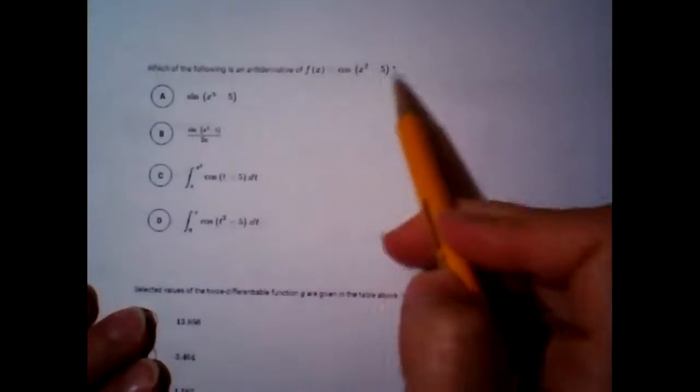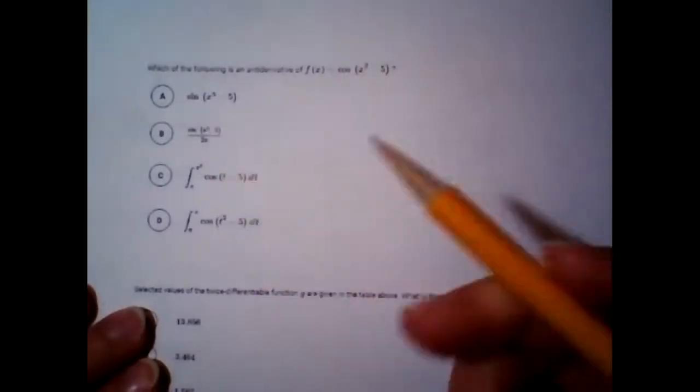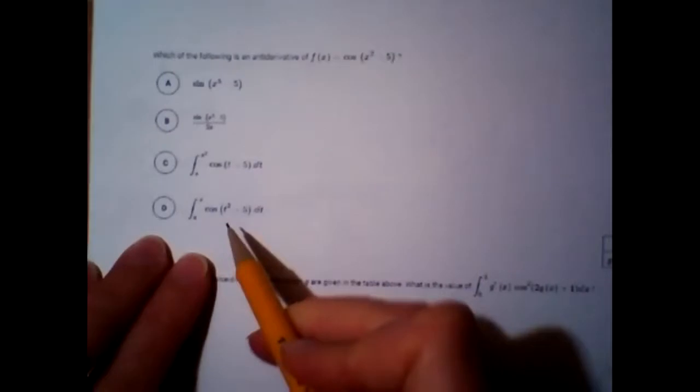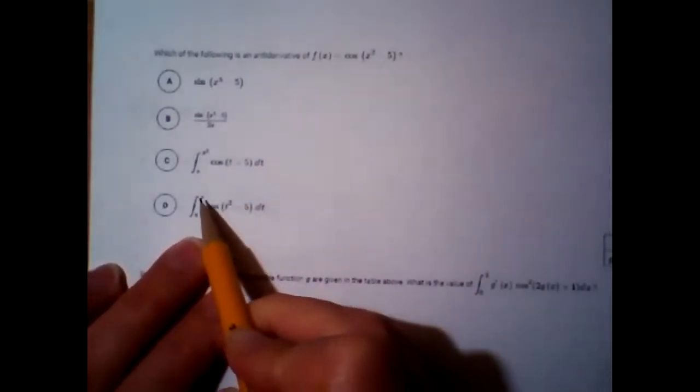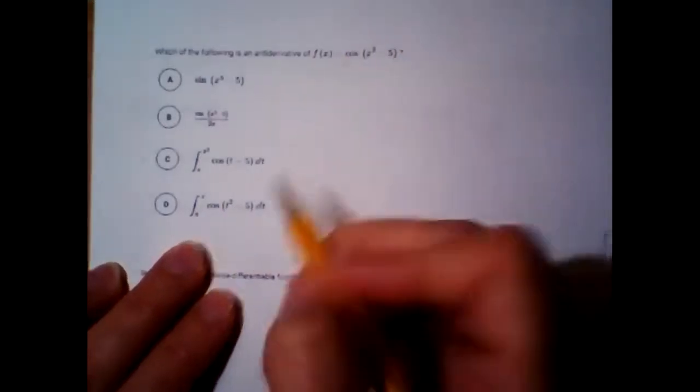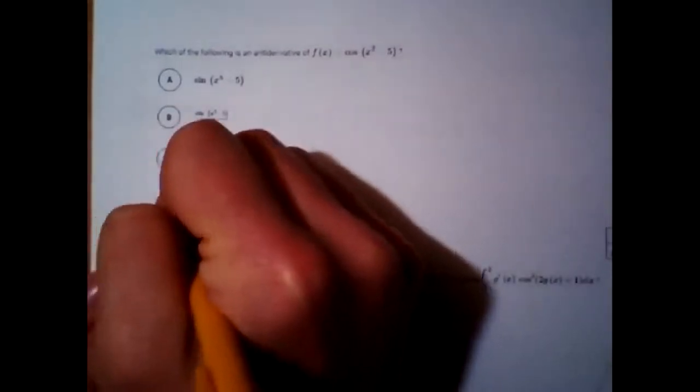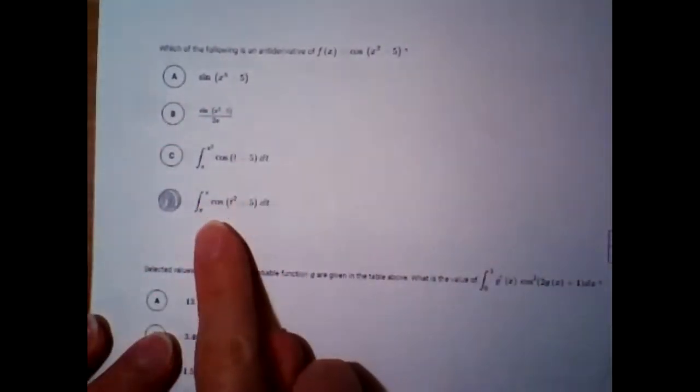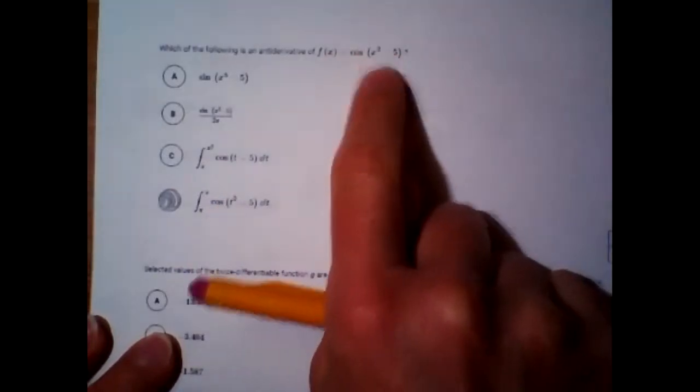Alright, so here, which of the following is an anti-derivative of this? That means which one of these, and I'll zoom way in here. If you did the derivative, you would get this as the answer. Like, this is the answer. It's like, which one is the question? And it is going to be D. If you do the derivative of this, you're just going to plug X in for T. And that's going to give you cosine X squared minus 5, which is this answer here. So, that one is D. Again, it's an anti-derivative. So, if you do the derivative of this, you will get what's given in the box.